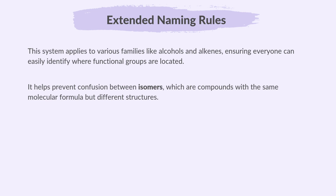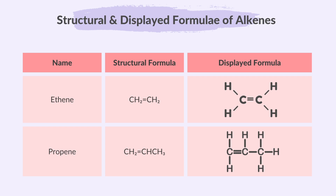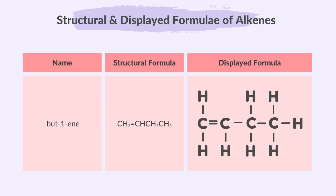It helps prevent confusion between isomers, which are compounds with the same molecular formula but different structures. Here are the structural and displayed formulas for alkenes containing up to four carbon atoms per molecule. Propene doesn't have any numbering because the double bond in propene is always between the first and second carbon atoms, regardless of the direction of numbering. In but-1-ene, the double bond is located between the first and second carbon atoms. We start numbering from the end closest to the double bond, so this end carbon is carbon number one, and the numbering continues to two, three, and four.